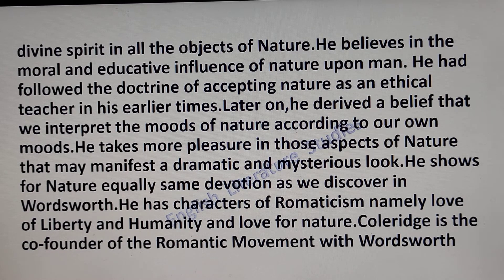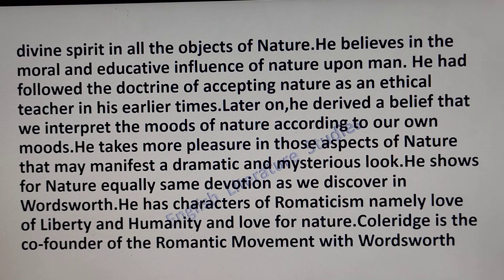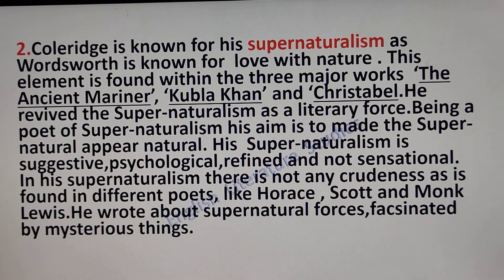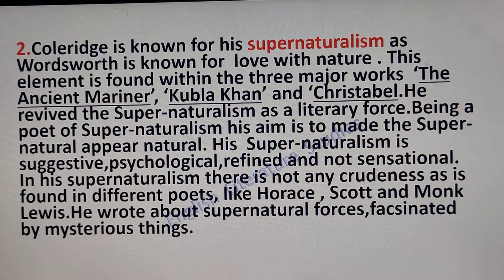Coleridge shows the same devotion for nature as we discover in Wordsworth. He has characteristics of romanticism, namely love of liberty and humanity and love for nature. He is the co-founder of the romantic movement with Wordsworth, and he is also known for supernaturalism. This element is found within his three major works: The Ancient Mariner, Kubla Khan, and Christabel.